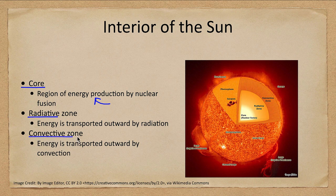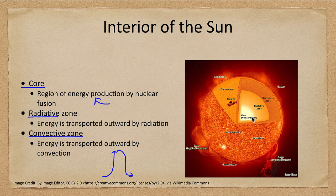Then there is the convective zone, closer to the surface, where there are convective currents. Material is heated up, rises to the top, cools off, and then goes back down. So convective currents occur within the convective zone, where material rises up to the top and then convects back down.